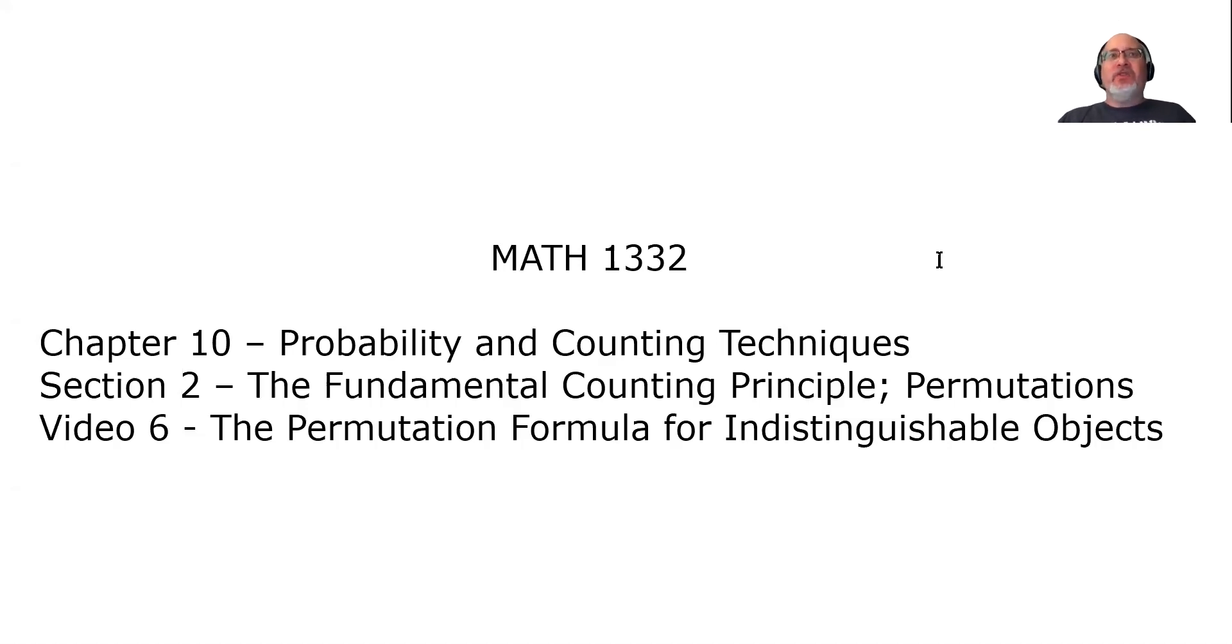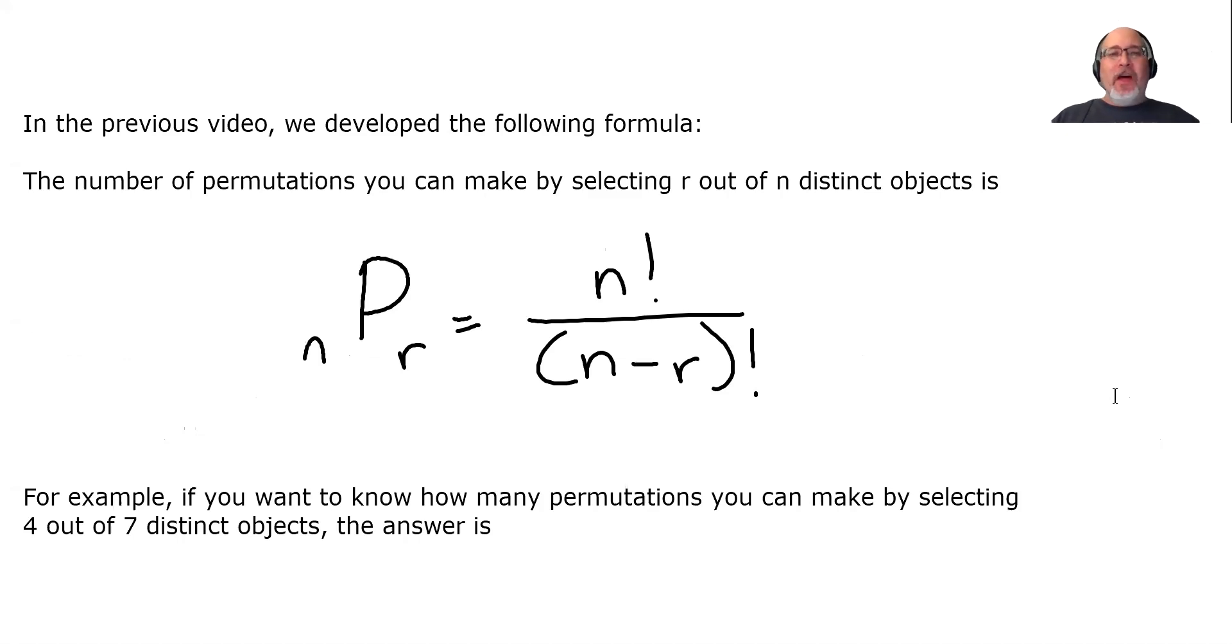What I mean by that is when we're counting permutations, we're counting the number of ways that we can arrange some objects. But some of those objects might be exactly the same. In the previous video, we developed the following formula. The number of permutations you can make by selecting r out of n distinct objects is nPr equals n factorial over (n-r) factorial.